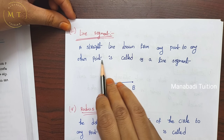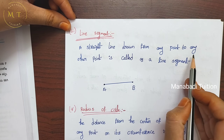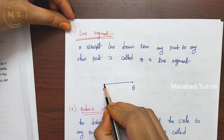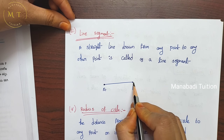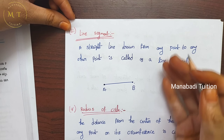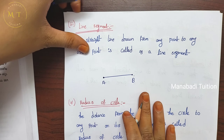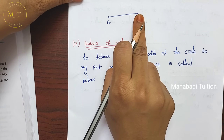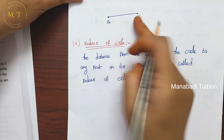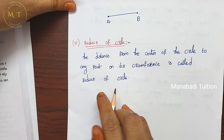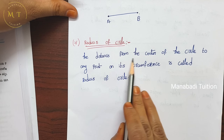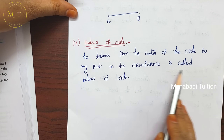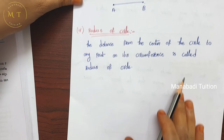Line segment: a straight line drawn from any point to any other point is called a line segment — joining one point to another. Radius of a circle: the distance from the center of a circle to any point on its circumference is called the radius of the circle.